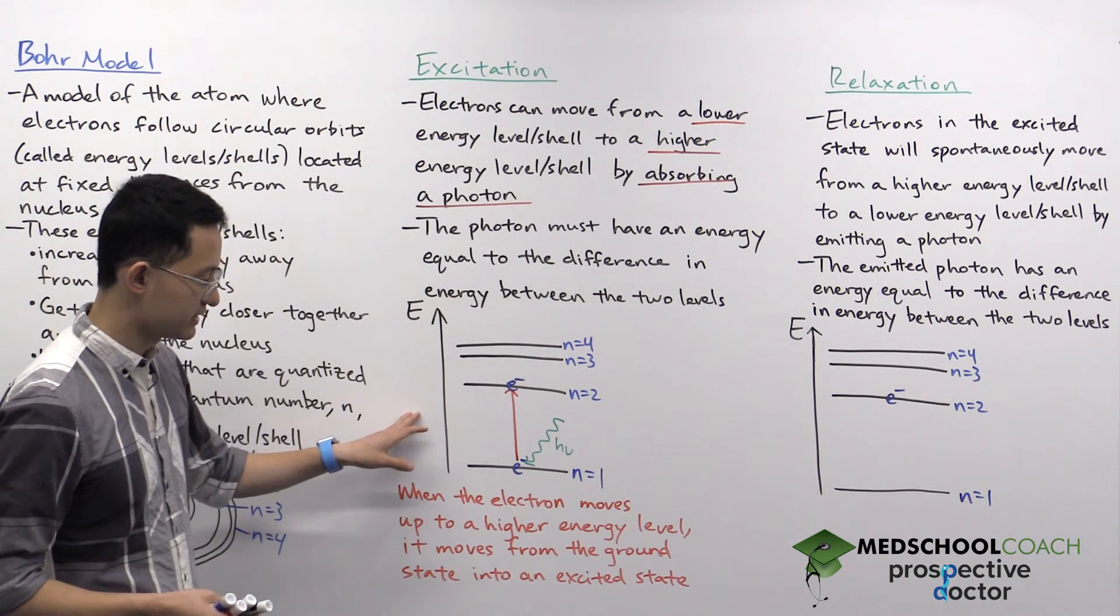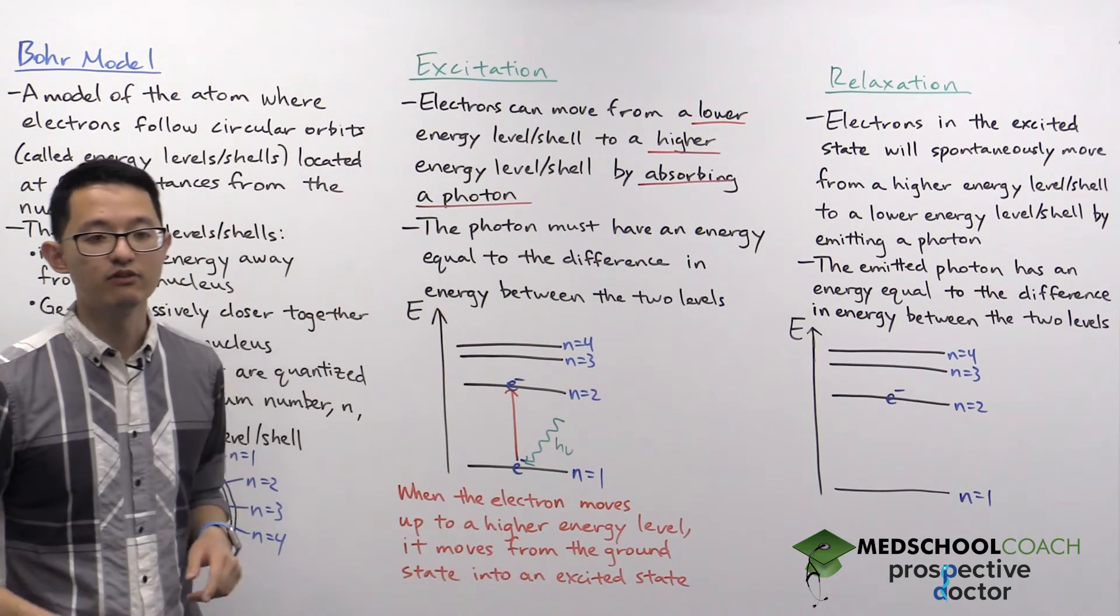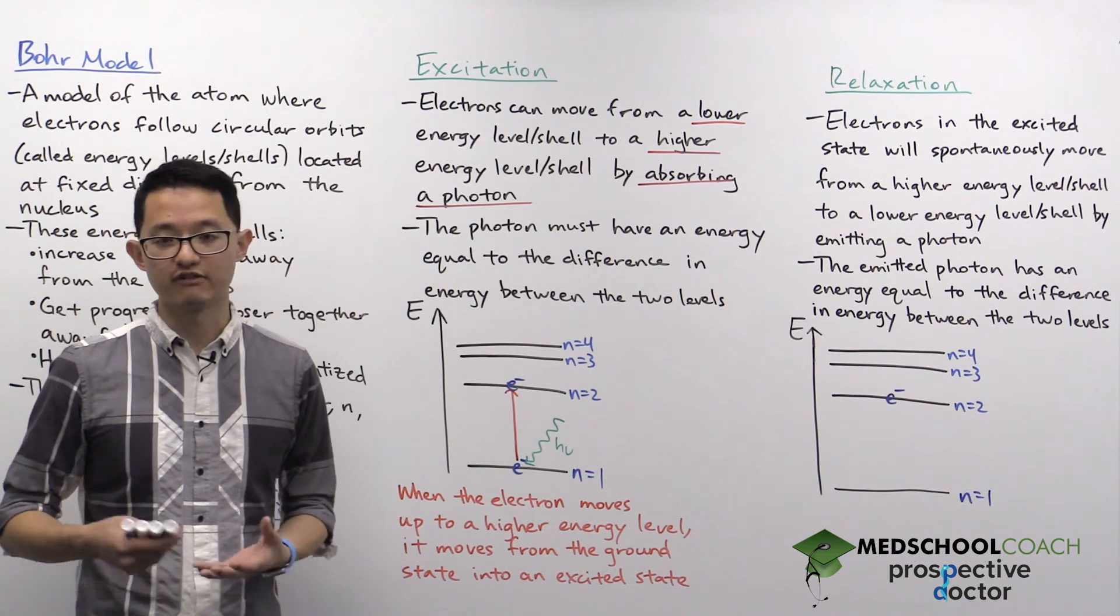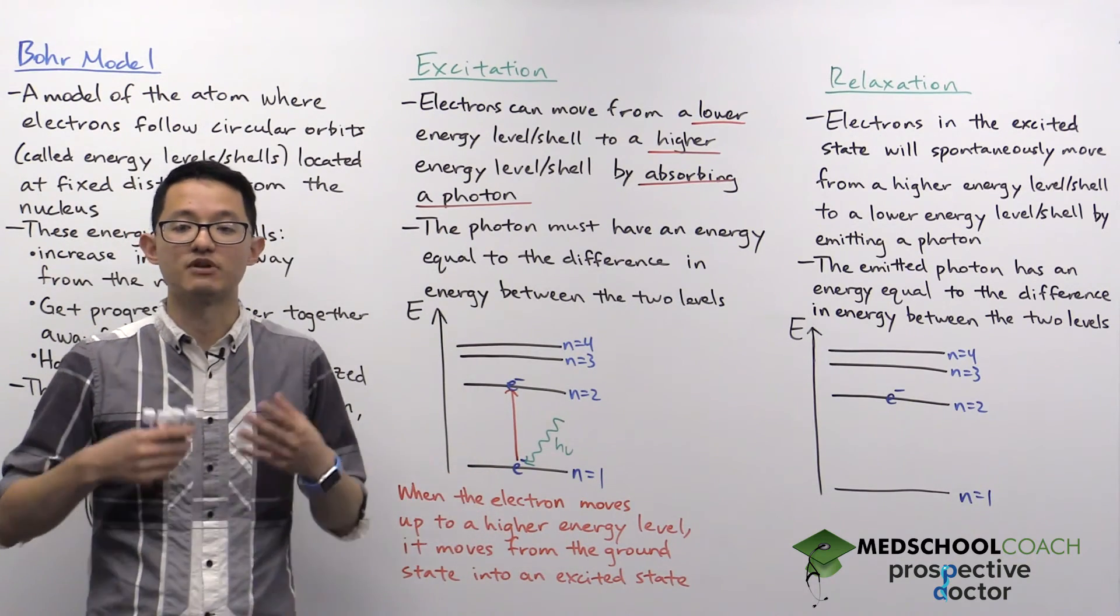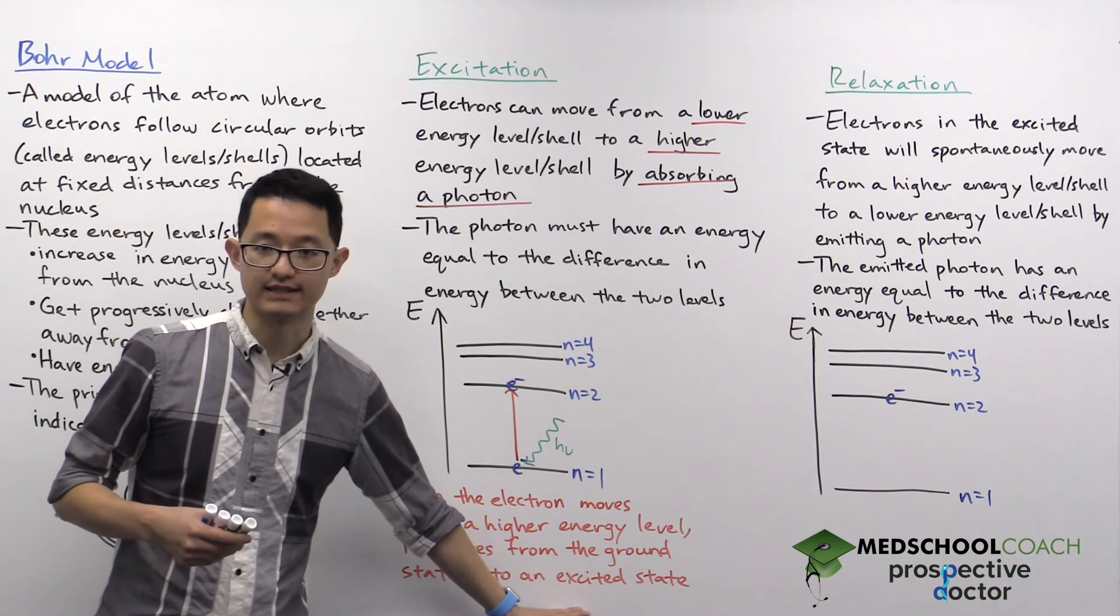One last thing to state about this process is at the beginning when the electron was at the lowest energy level, we said that we call the electron to be at its ground state, its lowest energy state. Once the electron absorbs energy and moves up to a higher energy state, it's now in what we call an excited state.